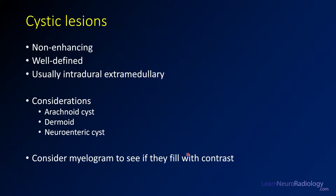Today we're going to talk about cystic lesions that occur within the spine. These are usually non-enhancing and well-defined lesions. They're almost always intradural and extramedullary, so they're inside the dura but outside the spinal cord. The main ones you're thinking about are arachnoid cysts, dermoid cysts, and neuroenteric cysts. An additional test to consider is a contrast-enhanced myelogram, which can give you more information about whether these lesions fill with contrast.